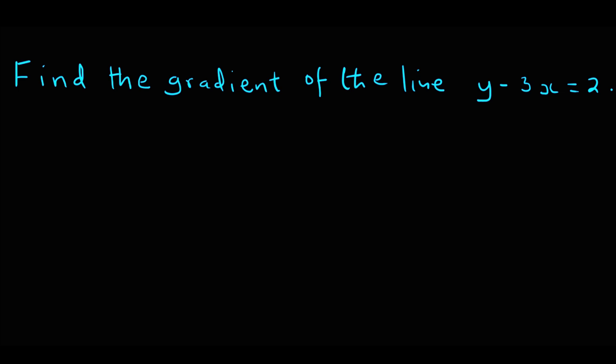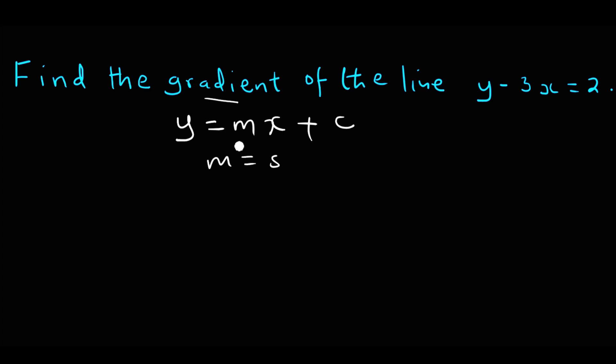Find the gradient of the line y minus 3x is equal to 2. To obtain the gradient, we only have to write this equation in the form y is equal to mx plus c. Then we can obtain the gradient from m, because m stands for the gradient.